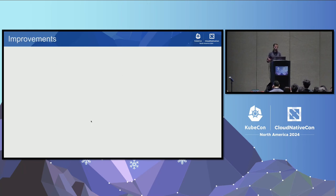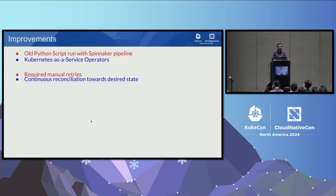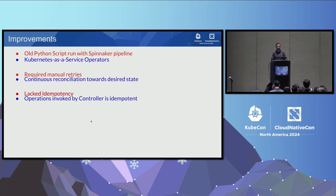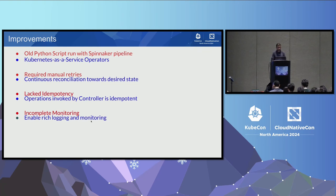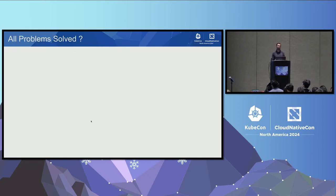Let's evaluate the improvements. The old Python script is in red, the new Kubernetes-as-a-Service operator in blue. Earlier we required manual retries; now we have continuous reconciliation toward the desired state. Earlier we lacked idempotency; now all operations invoked by the controller are idempotent as they need to run continuously. We had incomplete monitoring; now running as an online service we enabled rich monitoring and logging. Earlier we exposed low-level cloud-specific details; now we abstracted them with a consistent interface across all environments. But have we solved all the problems?